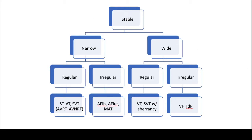The last tachycardias we're going to talk about are the wide complex irregular tachycardias, and there are just two of them: V-fib and torsades de pointe.